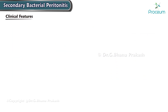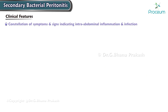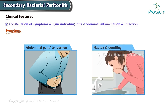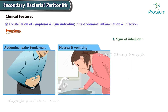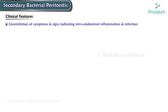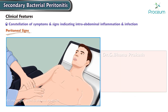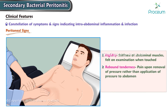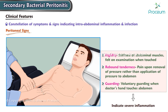In Secondary Bacterial Peritonitis, patients typically present with a constellation of symptoms and signs indicative of intra-abdominal inflammation and infection. Symptoms commonly include abdominal pain or tenderness, gastrointestinal symptoms like nausea and vomiting, and signs of infection such as fever and shock. Peritoneal signs include rigidity, rebound tenderness, and guarding, indicating severe inflammation.